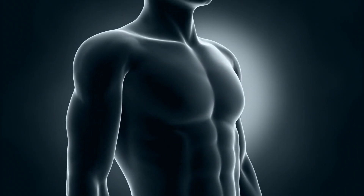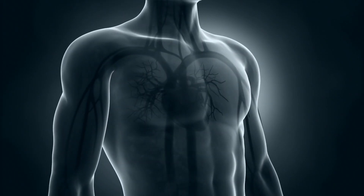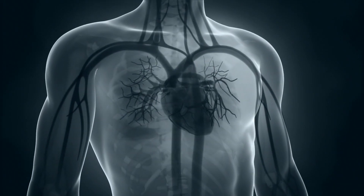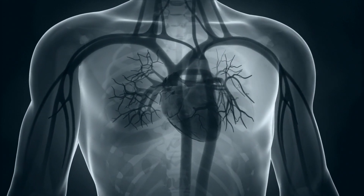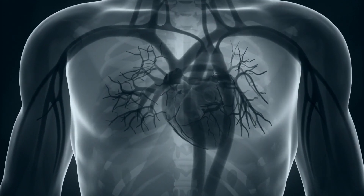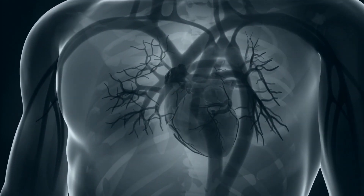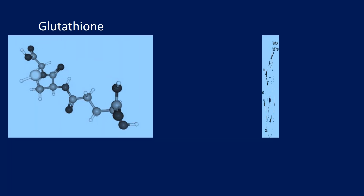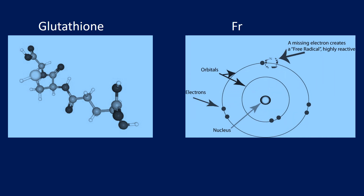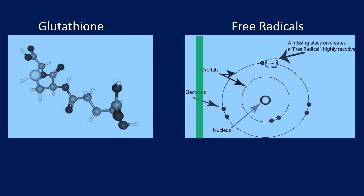Glutathione is one of the most important molecules needed to promote health and prevent disease. Glutathione is a vital antioxidant in your body that helps neutralize free radicals, which are molecules that can damage your body's cells.